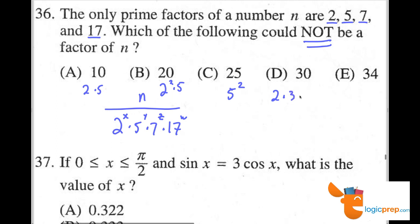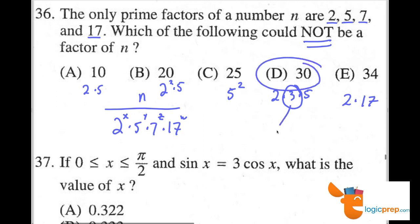And 30 is 2 times 3 times 5. Here we have a new prime factor, 3, introduced. If we go to 34, that is 2 times 17. So 30 could not be a factor of n, because it introduces a new prime factor. We know only 2, 5, 7, and 17 are prime factors of n.